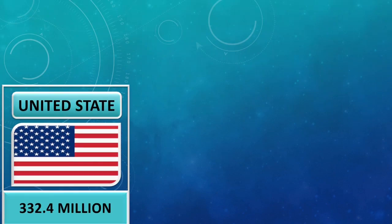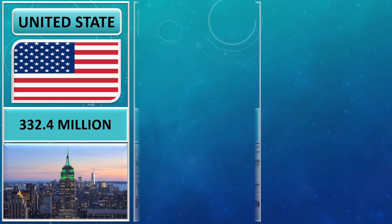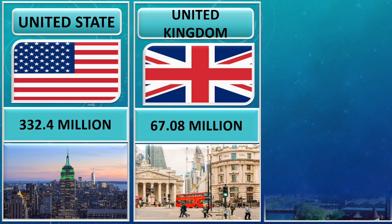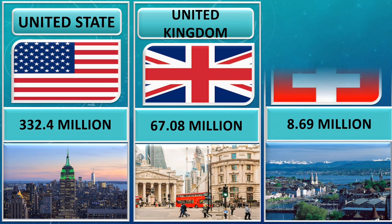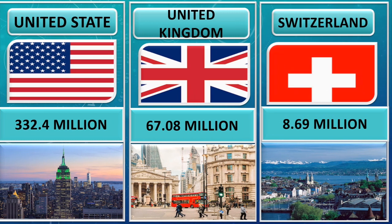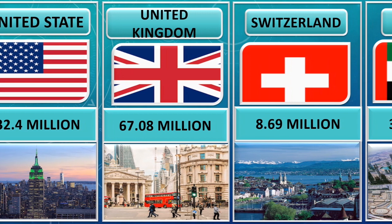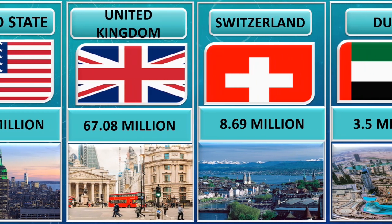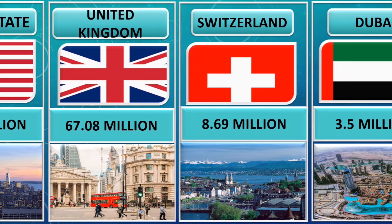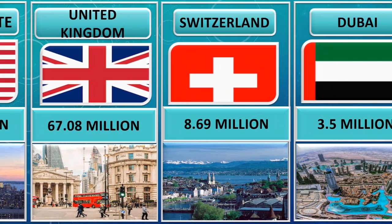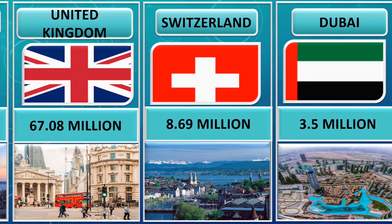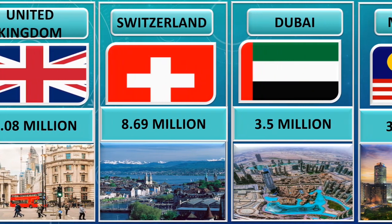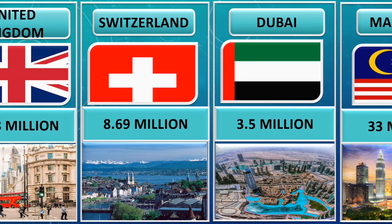Hello everyone, welcome back to Data Studio. This video is about comparison of populations from different countries of the world. Population of the United States is 332.4 million, population of the United Kingdom is 67.08 million, and population of Switzerland is 8.69 million.